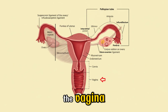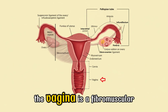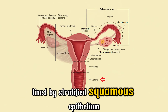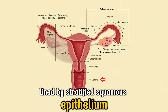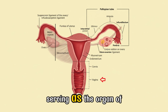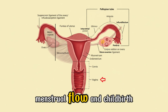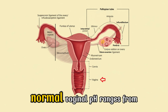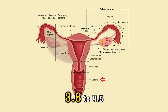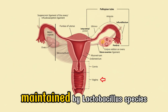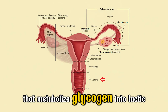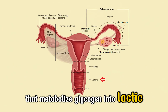The vagina is a fibromuscular canal lined by stratified squamous epithelium, serving as the organ of copulation, menstrual flow, and childbirth. Normal vaginal pH ranges from 3.8 to 4.5, maintained by Lactobacillus species that metabolize glycogen into lactic acid.